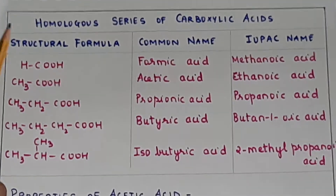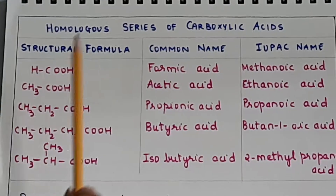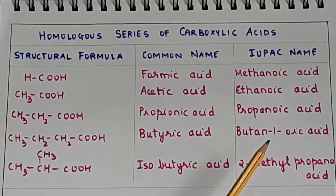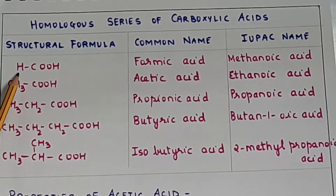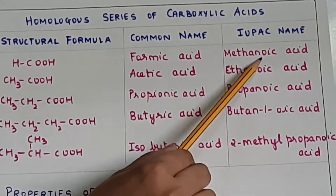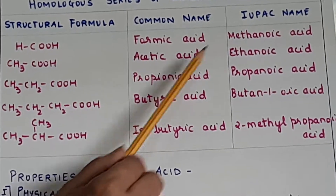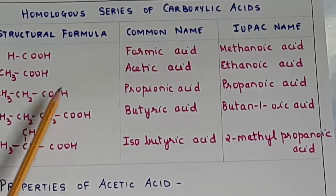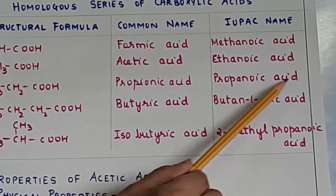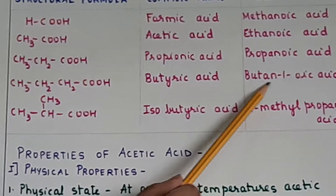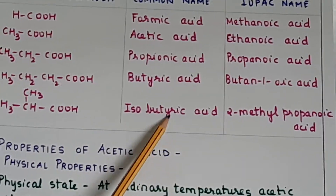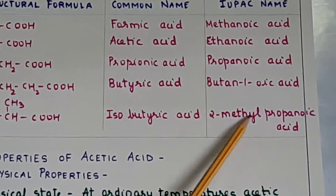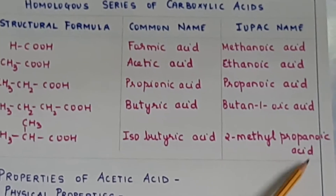Homologous series of carboxylic acids: first member is HCOOH — formic acid, IUPAC name methanoic acid. Next: CH3COOH — acetic acid, IUPAC name ethanoic acid. Then CH3CH2COOH — propionic acid, IUPAC name propanoic acid. Next: CH3CH2CH2COOH — butyric acid, IUPAC name butanoic acid. And CH3CH(CH3)COOH — isobutyric acid, IUPAC name 2-methylpropanoic acid. These common names and IUPAC names are important for match-the-column and name-the-following questions.